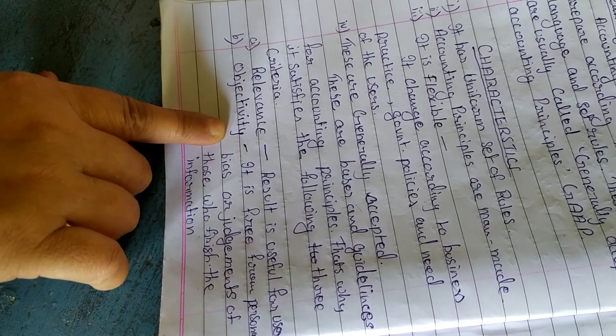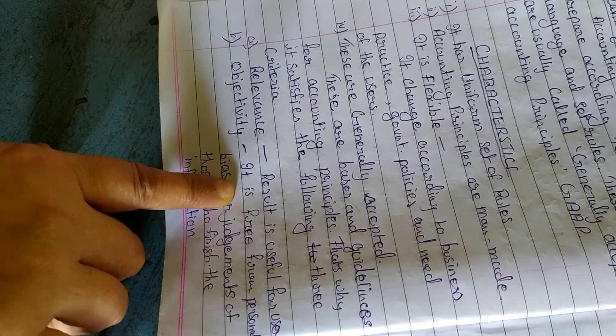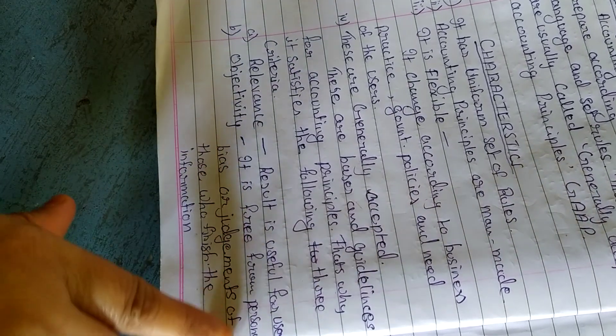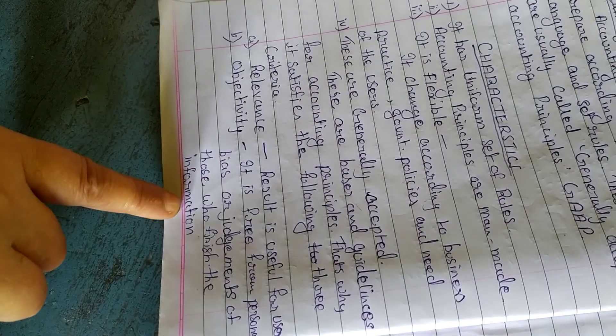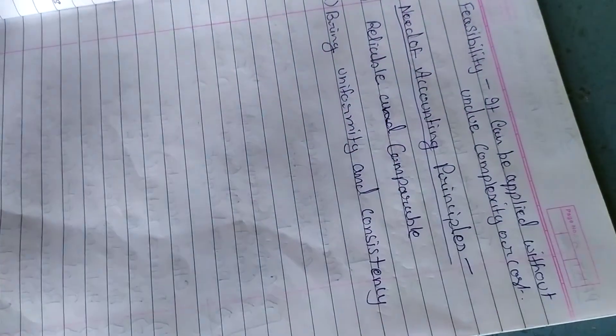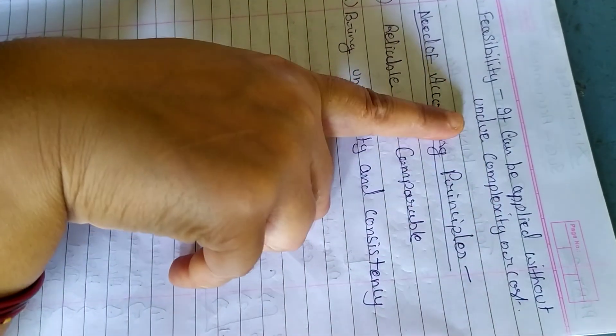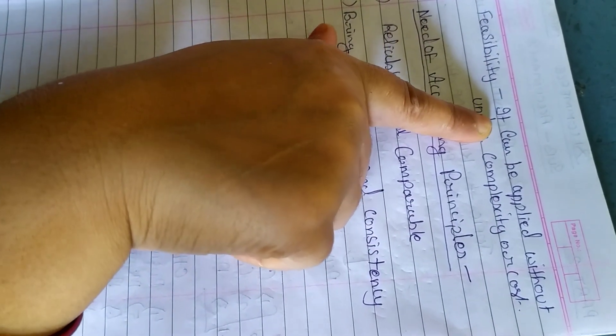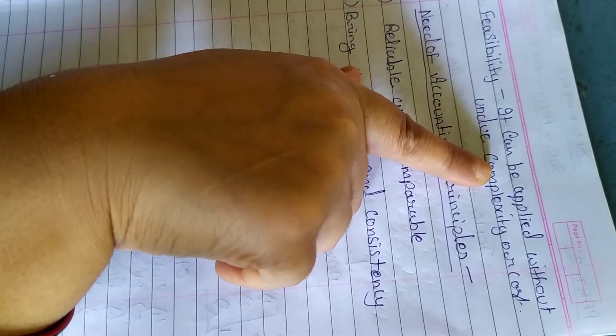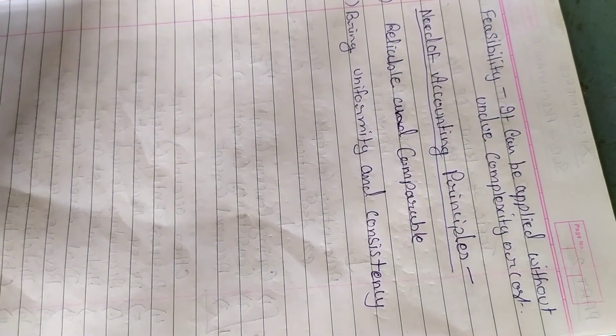Second is objectivity. It fulfills the objective of accounting that is free from the personal bias or the judgment of those who furnish the information. The next one is feasibility, and it can be applied without undue complexities or cost.